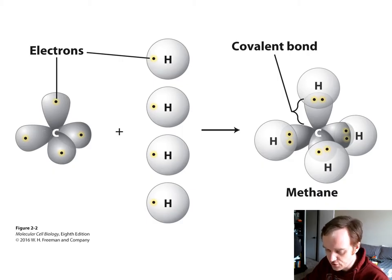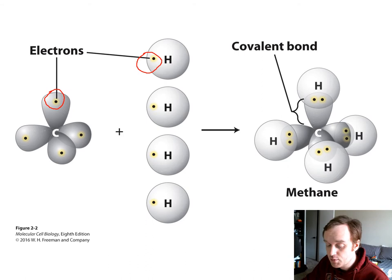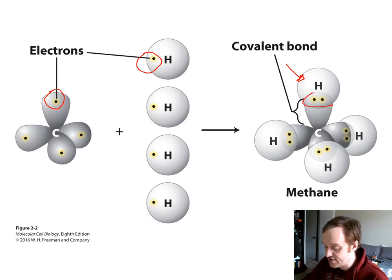A brief refresher on covalent bonds: these bonds form by sharing of electrons. In a carbon atom's outermost layer, we have a single electron, and in hydrogen atoms we also have a single electron, but both orbits want to have at least two electrons. So the hydrogen and the carbon will share an electron between both orbits. The hydrogen now has two in that orbit, and the carbon now has two in this specific orbit.